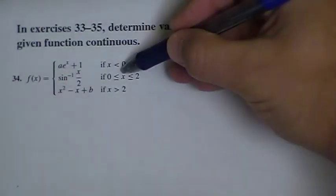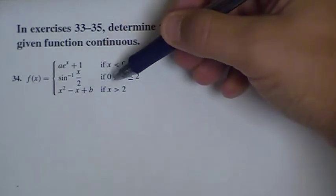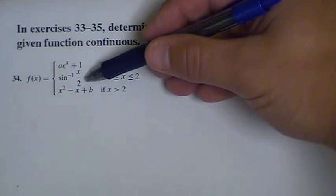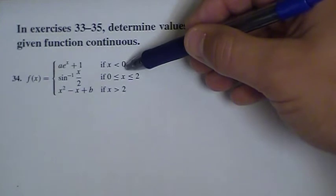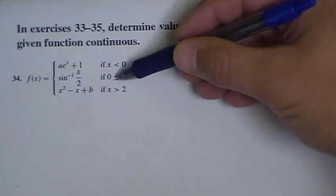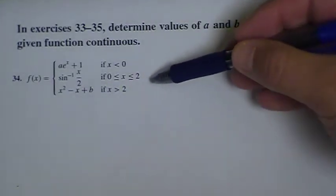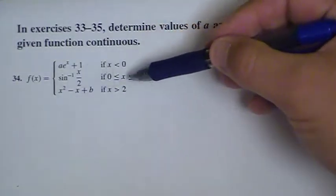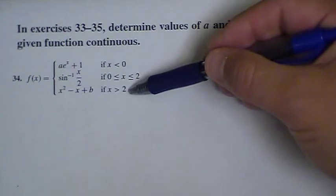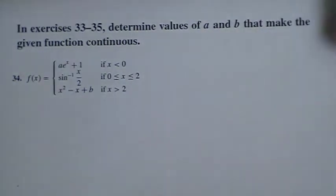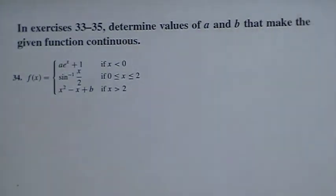We want the open circle where the exponential piece leaves off to be in the exact same location in the coordinate plane as the closed circle where the inverse sine piece picks up — that's at zero comma something. The same thing applies at the other break: we have a closed circle at two comma something, and we want the open circle where the parabola picks up to also be at two comma the same value. We want open and closed circles to coincide so you could graph this without lifting your pen from the page, meaning limits always exist.